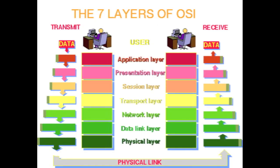Here we see a graphical representation of how the data originally is transmitted by the first user, travels through all the layers down into the physical layer, travels over the physical link, and then travels back up through the layers to be presented at the application layer to the second user.